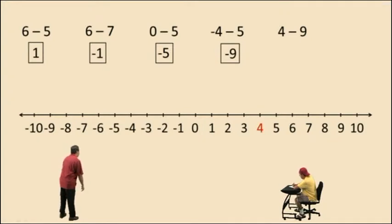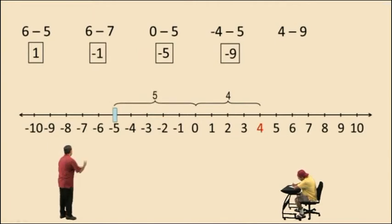Now let's do 4 subtract 9. In this case, we are going to get a negative answer. We start at 4. We move 4 units to the left, we're at 0. But we had to move a total of 9. So we moved 4, so we have to move 5 more to the left to move a total of 9, and we arrive at negative 5 on the number line. 4 subtract 9 is negative 5.